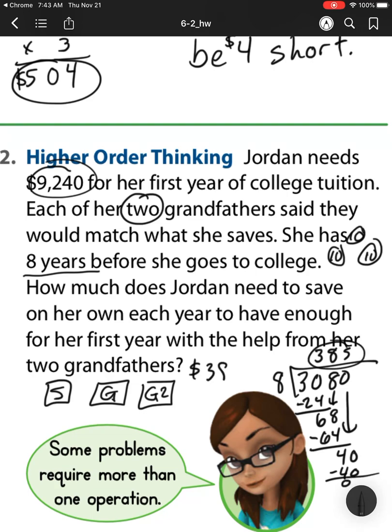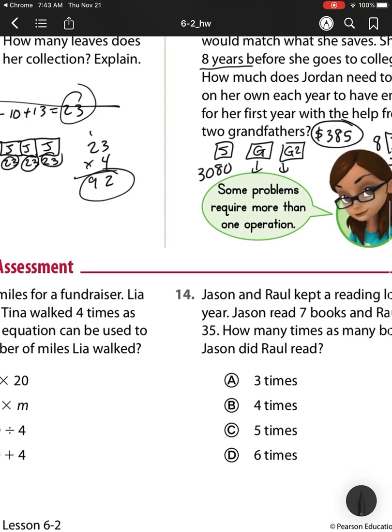So each year, for those 8 years, she will need to save $385. If she does, then she will have at the end that $3,080. And her two grandfathers will also match that $3,080.